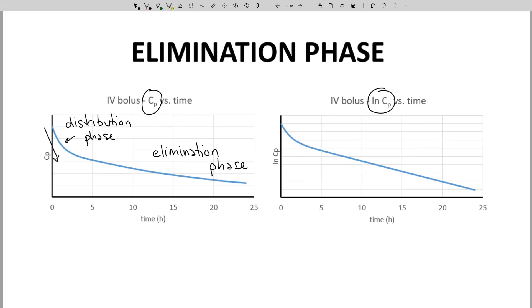During elimination, CP drops for two reasons. One is metabolism, and another is excretion.